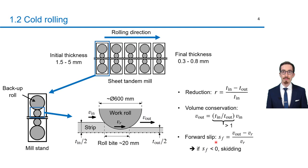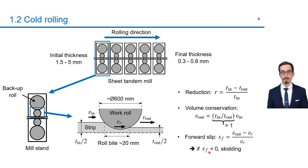If t_in is the entry thickness and t_out the exit thickness, the reduction is defined as the difference between these thicknesses divided by the entry thickness. Due to the reduction in thickness in the roll bite and volume conservation, the speed of the strip increases along the rolling direction. A key parameter in cold rolling concerning this speed is the forward slip, defined as the relative exit speed of the strip with respect to the rolling speed. If the forward slip is negative, friction is insufficient to entrain the strip and undesired skidding occurs.